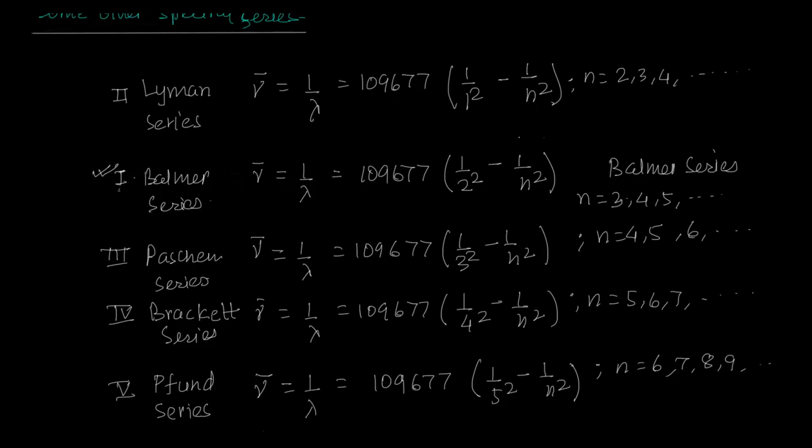So you could kind of say that n is equal to 1,254, and this equals 1 upon 1,254 square minus 1 upon n square where n will be 1,255, 1,256 and so on. And name it after yourself.